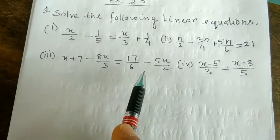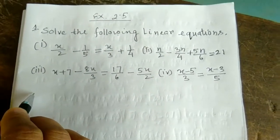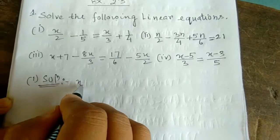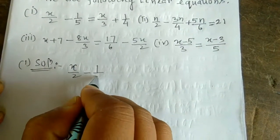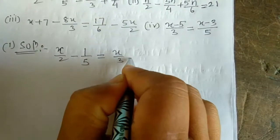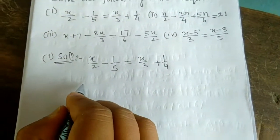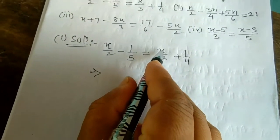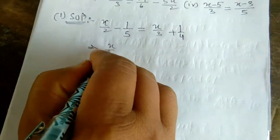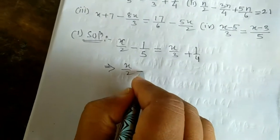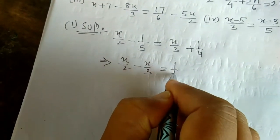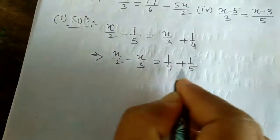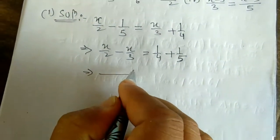Let me solve one by one. Solution number 1: x/2 - 1/5 = x/3 + 1/4. While solving an equation, we have to bring all the variables to the left side. So x/2, and x/3 from the right side brought to the left becomes minus x/3. The constant 1/4, and minus 1/5 transferred to the right becomes plus 1/5. Then we take the LCM of both sides.